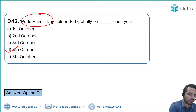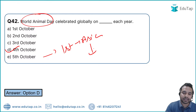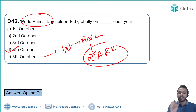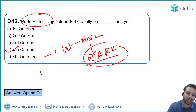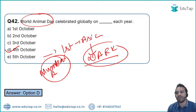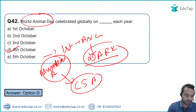Question 45: Which airport has become the first airport in Asia to commission a Disabled Aircraft Recovery Kit? The answer is Chhatrapati Shivaji Maharaj International Airport, Mumbai.